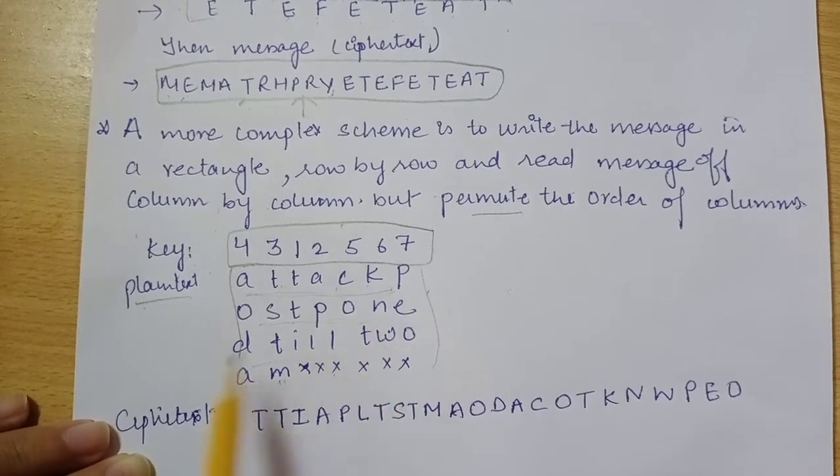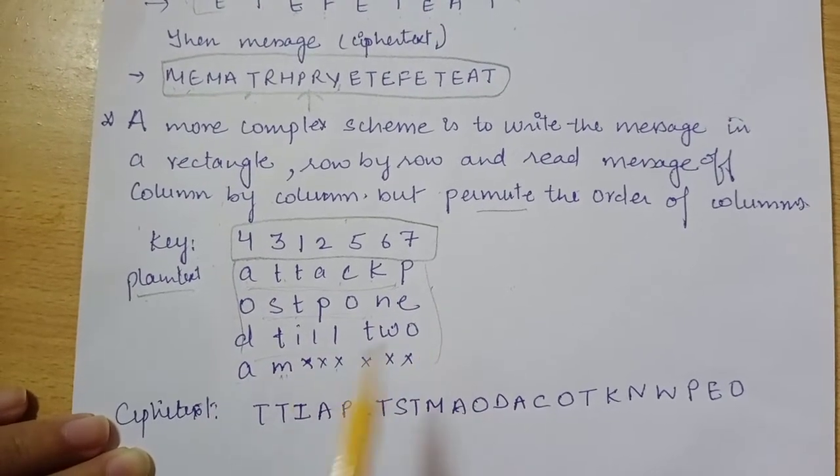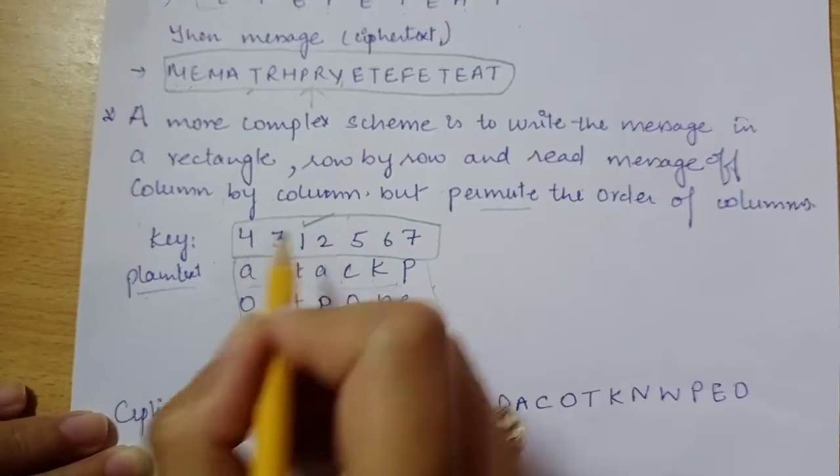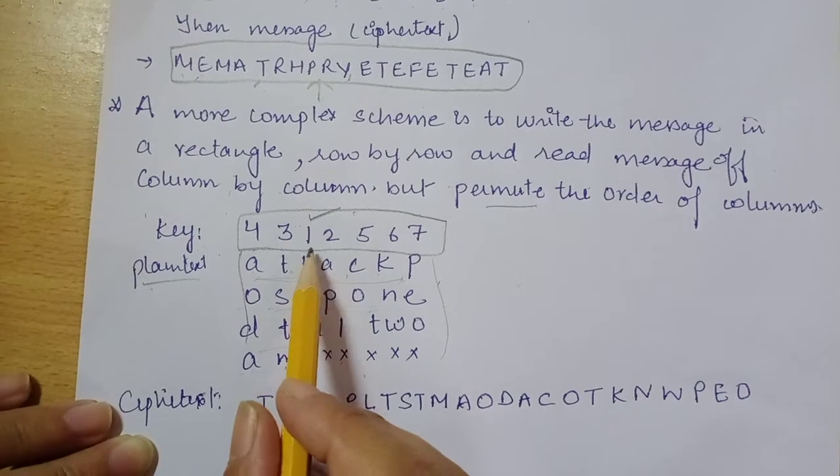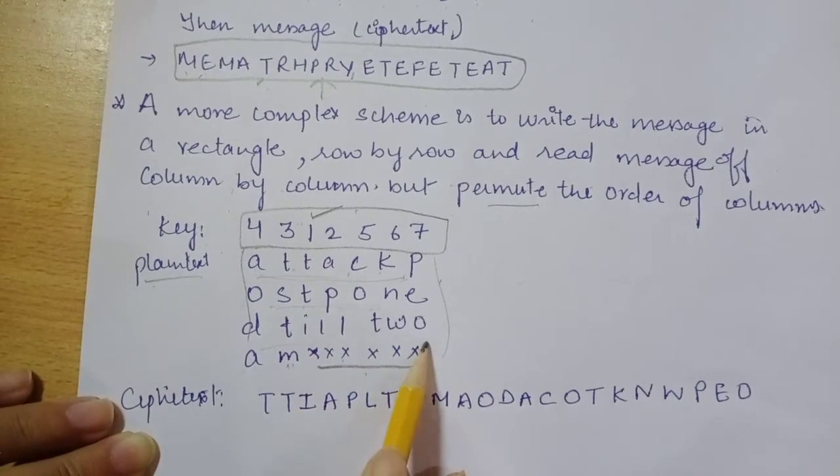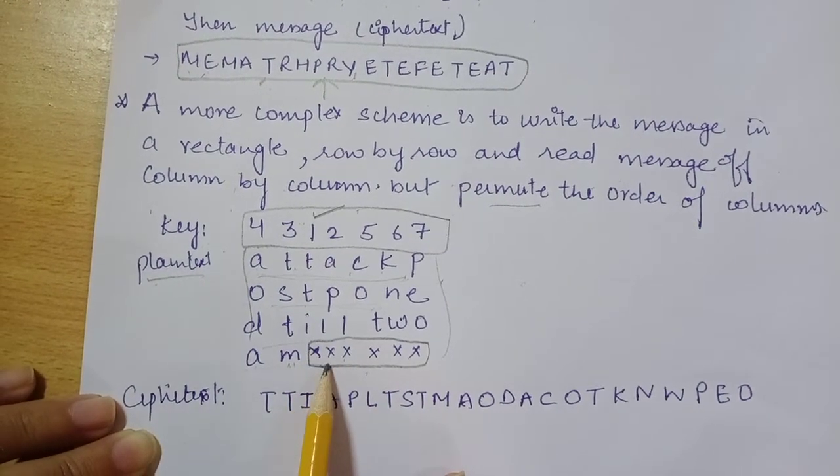But how to read the columns? Key-wise. So first of all, we read the first column according to the key. So this X is basically for empty spaces.